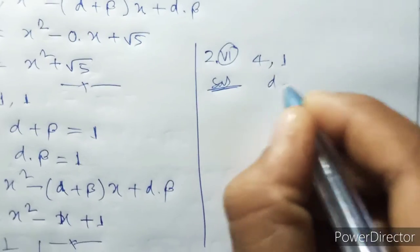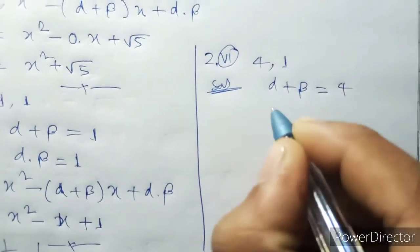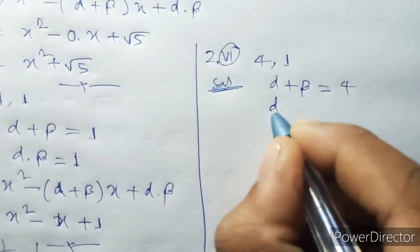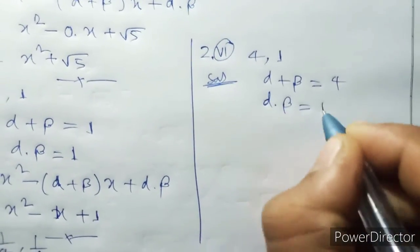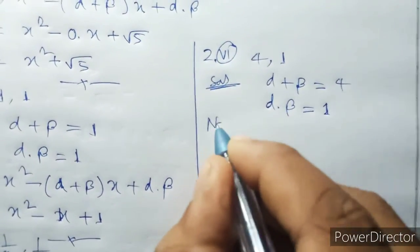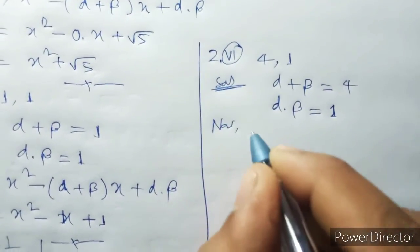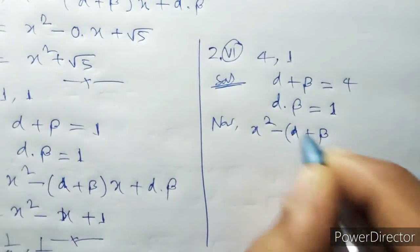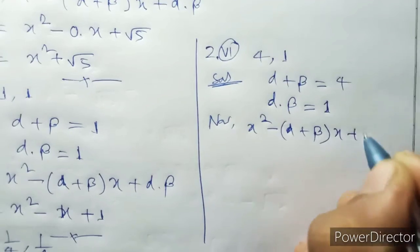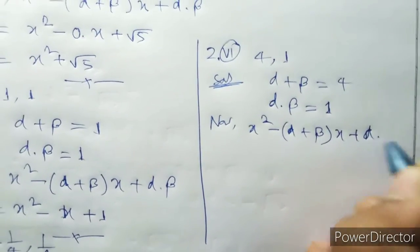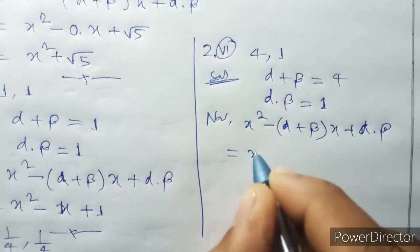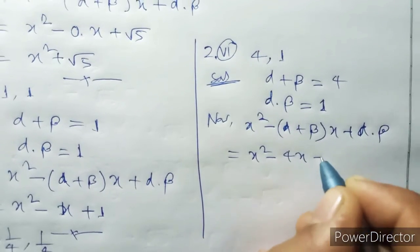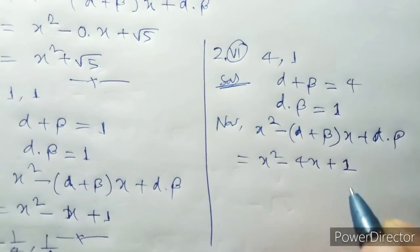Number six: alpha plus beta equal 4, alpha into beta equal 1. Now x squared minus alpha plus beta x plus alpha into beta equals x squared minus 4x plus 1.